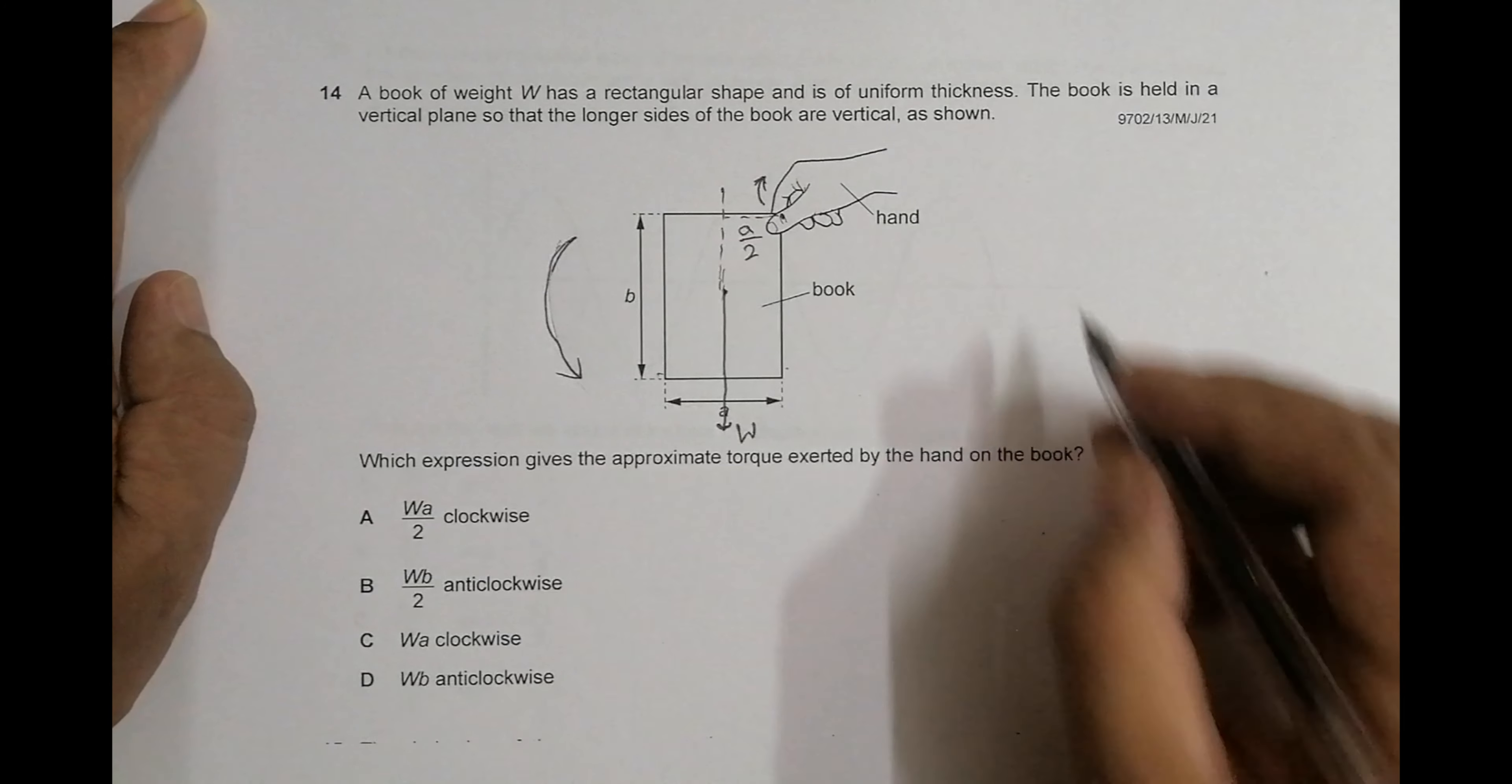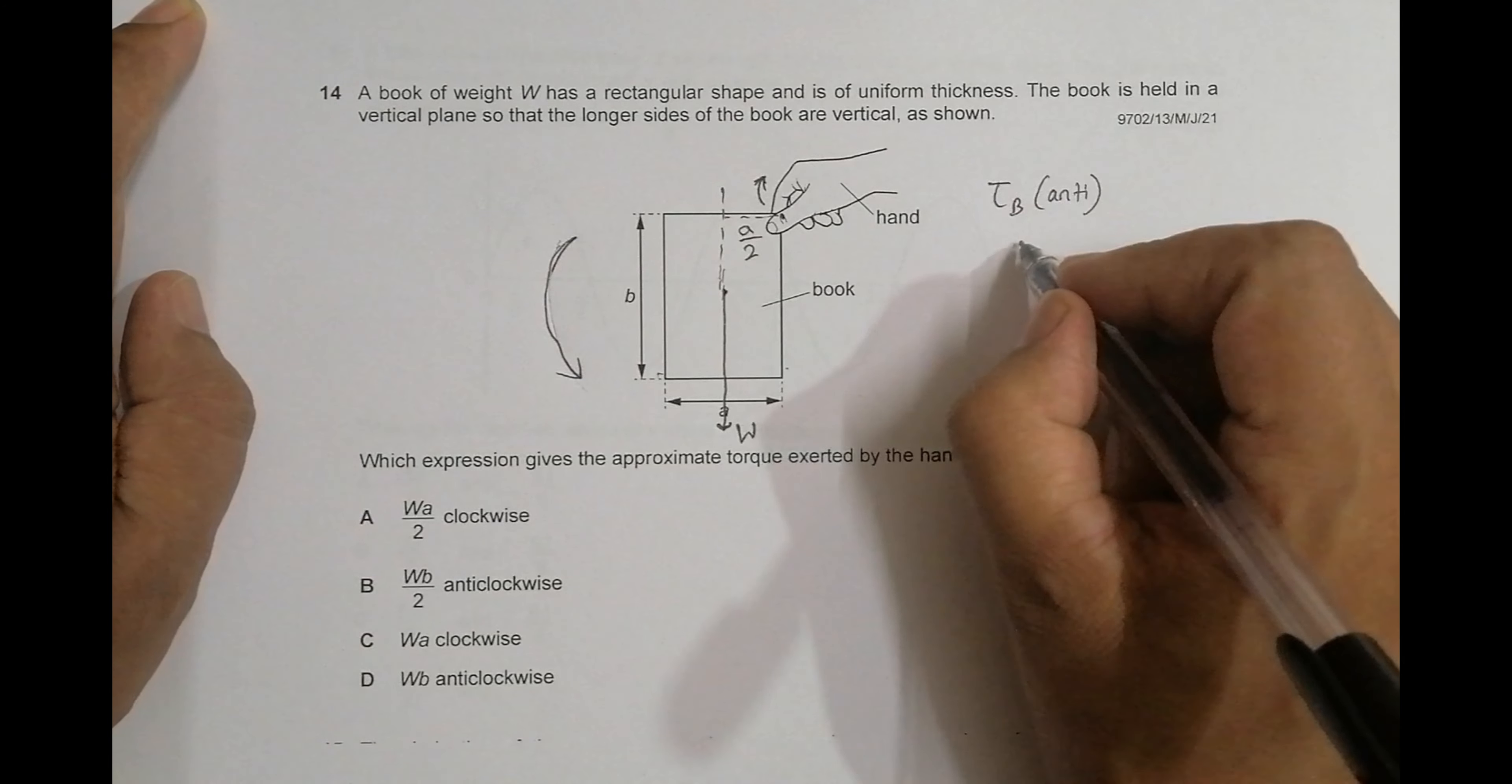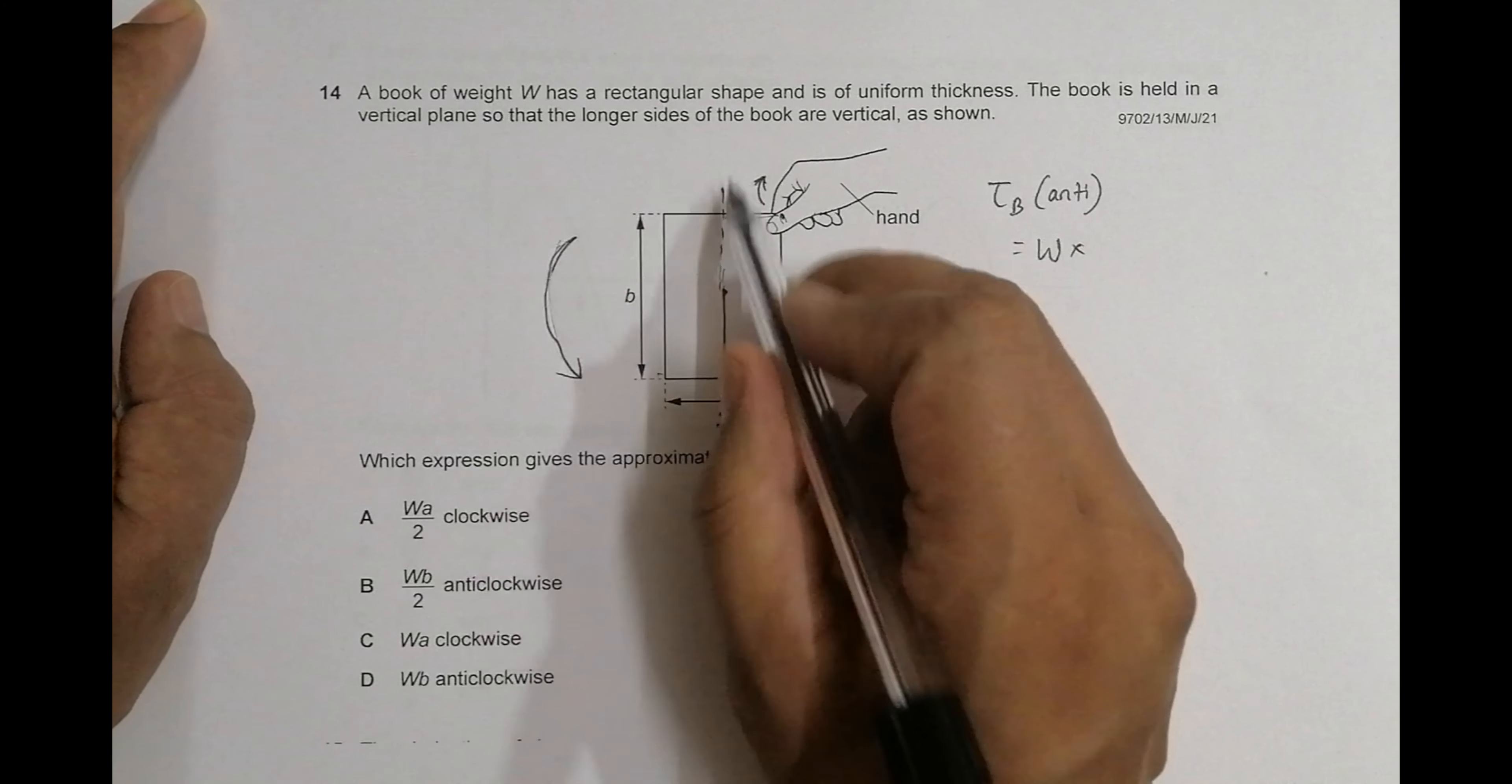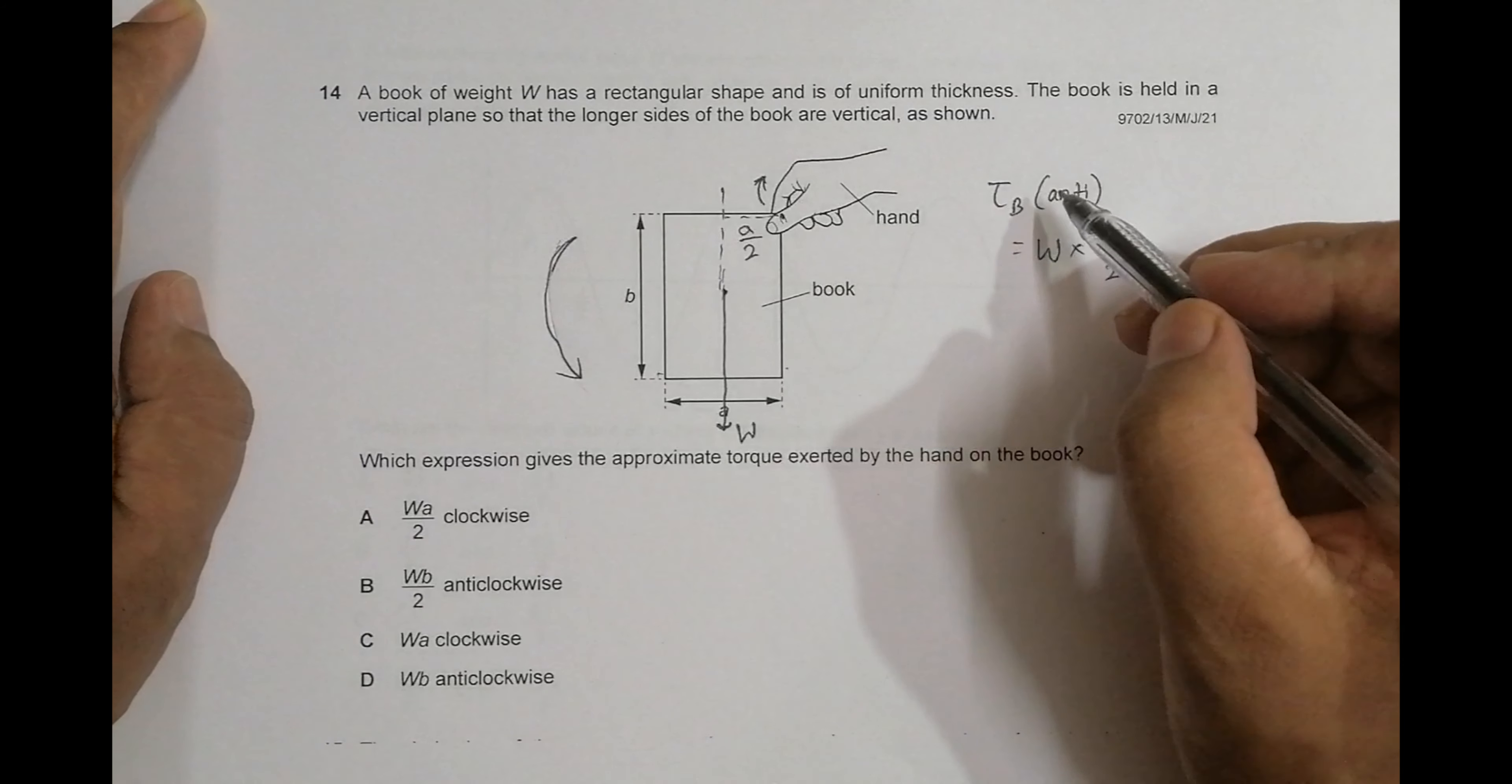Now the torque exerted by the book in anticlockwise sense is equal to force, which equals the weight, into the perpendicular distance from the fulcrum to the line of action of the force. This is the line of action of the force. It's equal to a by 2, so this is the torque exerted by the book in anticlockwise sense.